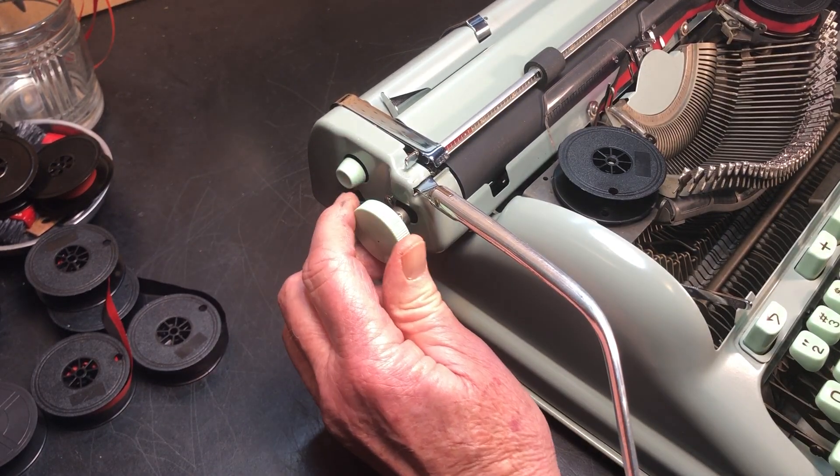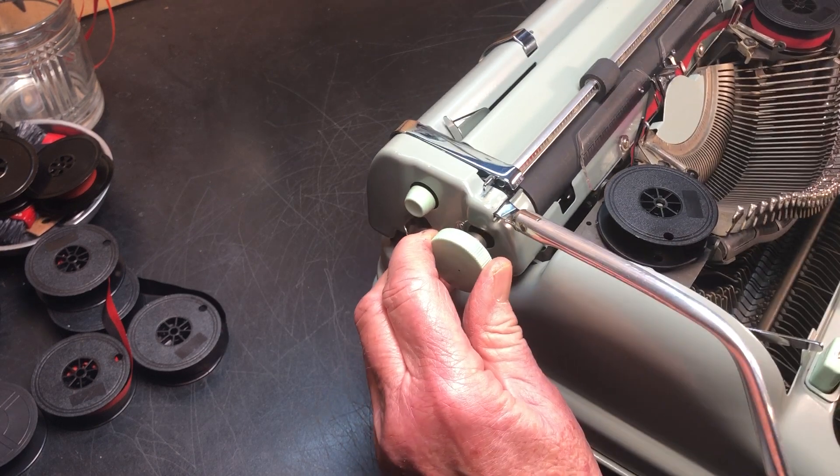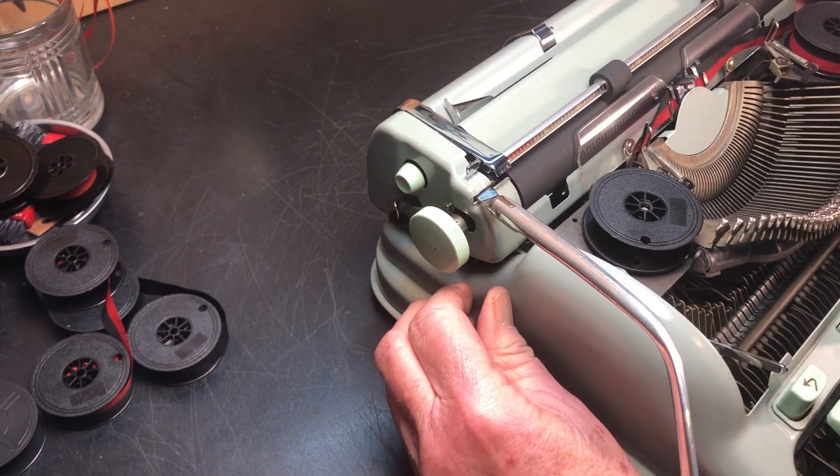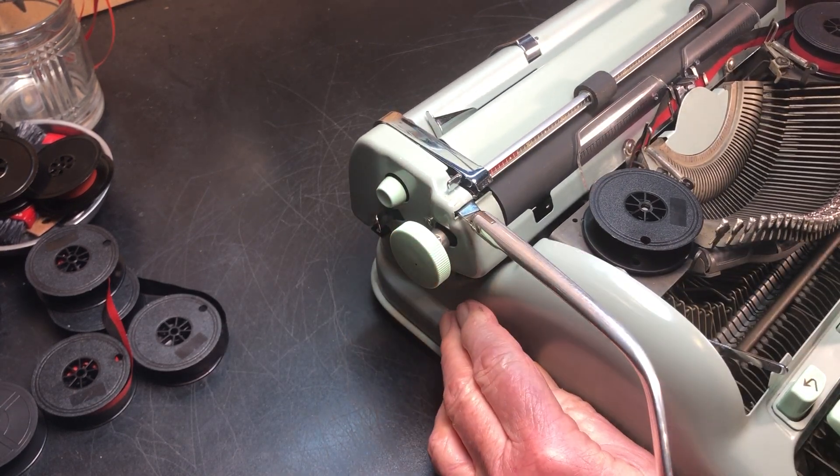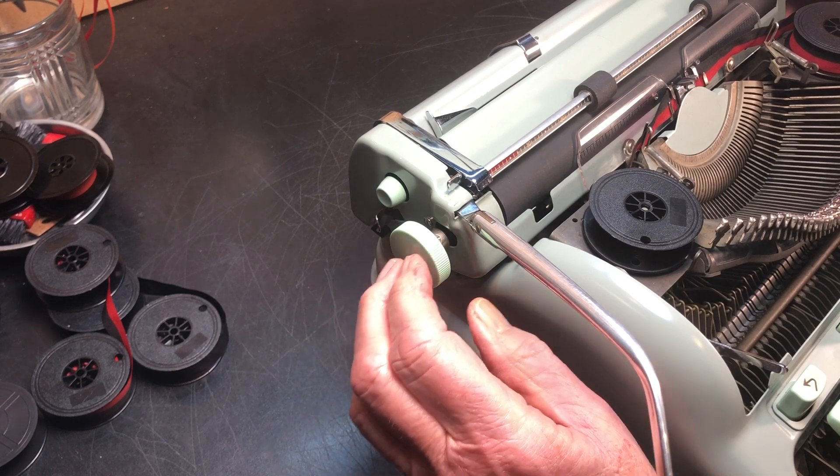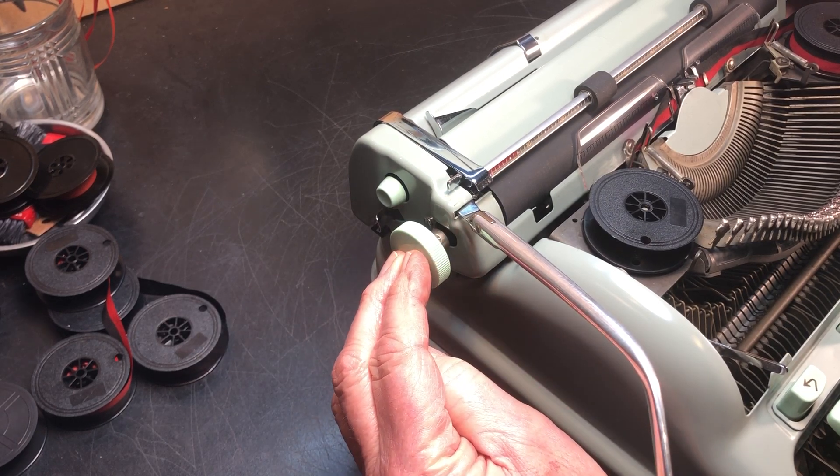I have a customer who's got a problem with the variable mechanism on the Hermes 3000. The way it works, when you push the knob in, it engages the gear.